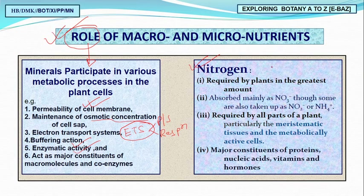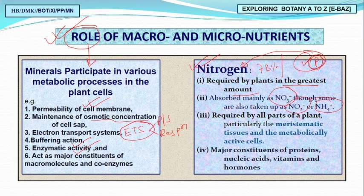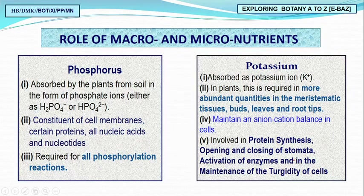Nitrogen is the most important macronutrient. It constitutes 78 percent of the atmosphere and is maximum inside the cell because of proteins, the structural units containing nitrogen. Without nitrogen, proteins cannot be synthesized. Plants require nitrogen in the greatest amount, absorbed as NO₃⁻, NO₂⁻, and ammonium ions. It is required by meristematic and metabolically active tissues and is an important constituent of proteins, nucleic acids, and hormones.